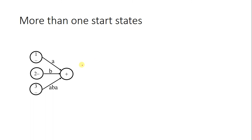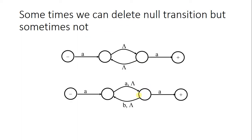This transition graph has multiple start states — this one, this one, and this one — so it can accept A, B, and AB. Sometimes you can remove null transitions from a transition graph. Here, one null transition is not needed and can simply be removed because it serves no purpose. But another null transition cannot be removed because it makes certain patterns optional.